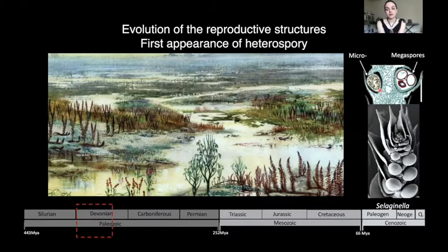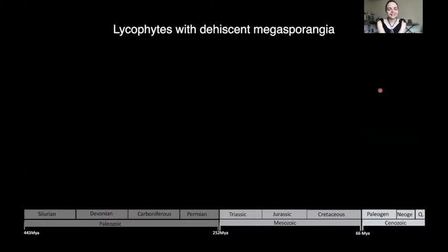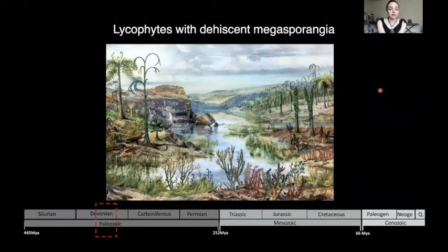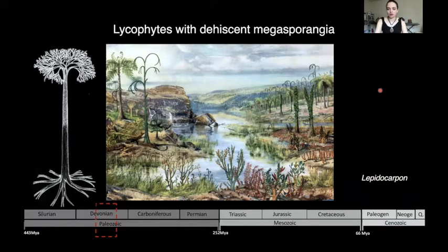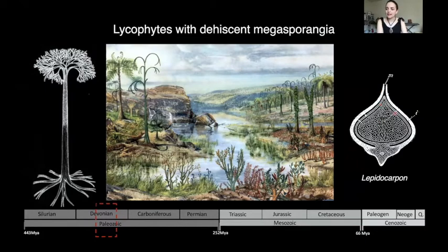There is also endosporic development at this point. Another key lineage within lycophytes that was very successful during the Carboniferous were Lepidodendrales — very different from lycophytes we know nowadays, they were very tall trees. They also evolved a structure resembling a seed, a functionally convergent seed-like structure. We find this in Lepidocarpon, where we see a megasporangium covered by integument-like structures, with food storage tissue and an opening resembling a micropyle. The difference is that this megasporangium dehisces releasing the archegonia on the surface, allowing easy access for flagellated sperm — a dehiscent megasporangium.